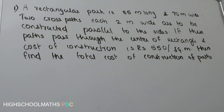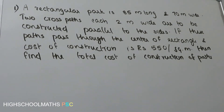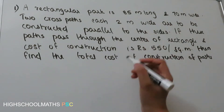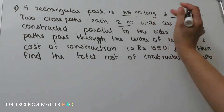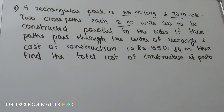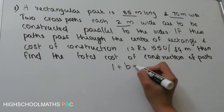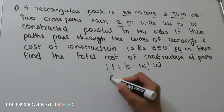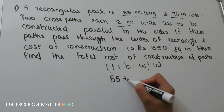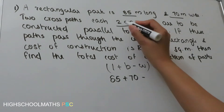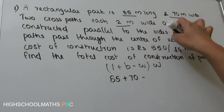If you have 3 values, you can summarize: first, L plus B minus W into W; and then L plus B minus 2W.